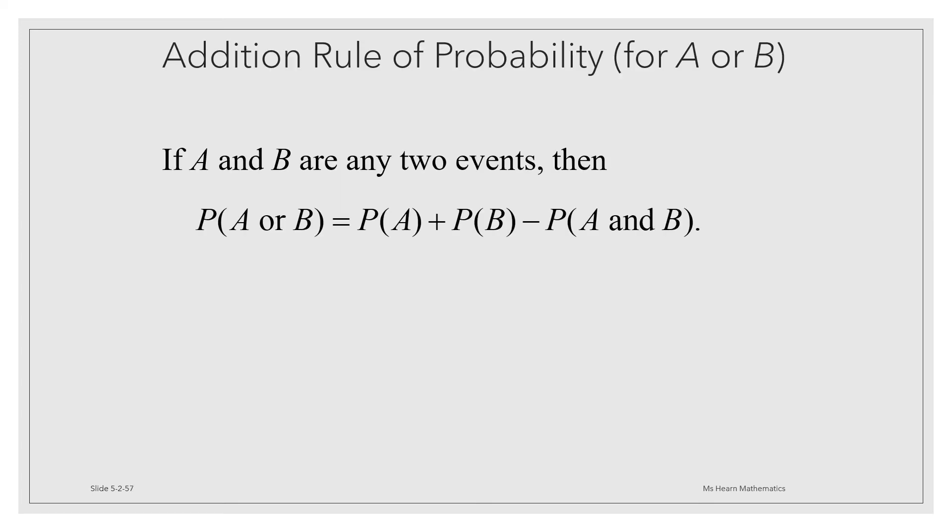So when we apply the addition rule of probability, when we find the probability of A or B by adding the probability of A plus the probability of B minus the probability of both, if we have mutually exclusive events, there is no probability of both. The probability of both would be zero. So in that case, it simplifies the formula, and the probability of A or B is just the probability of A plus the probability of B.